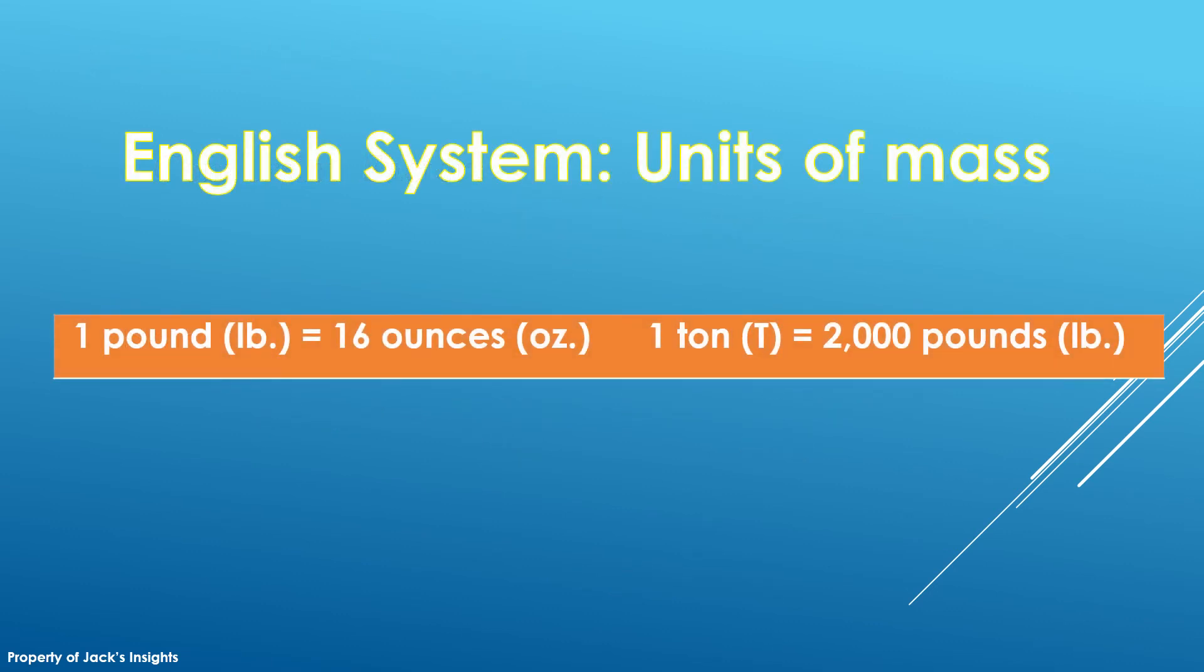These are also the basic equivalences of units in the English system. We have 1 pound, the symbol for pound is lb, is equal to 16 ounces or oz. And 1 ton, capital T in symbol, is equal to 2000 pounds.